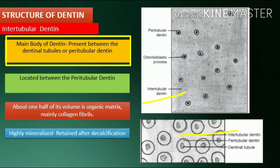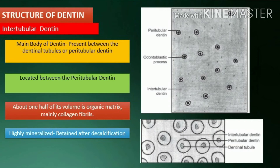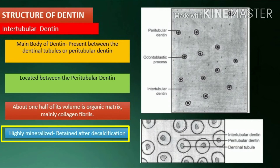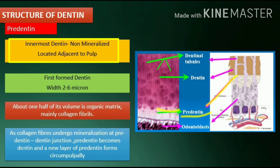The main mass of dentin is composed of intertubular dentin, present between the dentinal tubules or peritubular dentin. About one half of its volume is organic matrix — mainly collagen fibrils — which are randomly arranged around the dentinal tubules. It is highly mineralized and the collagen matrix is retained after decalcification.